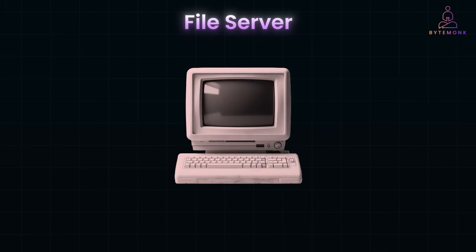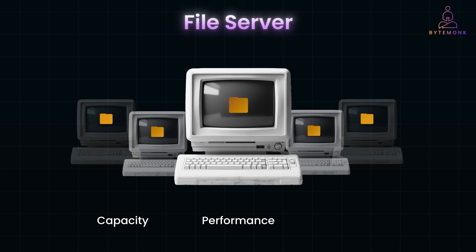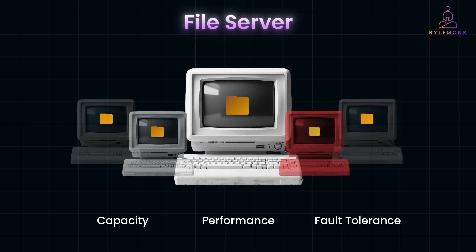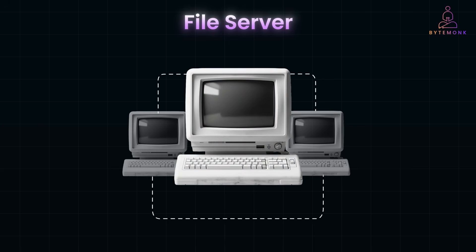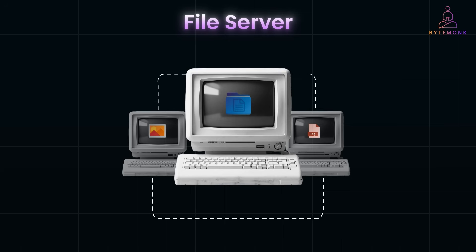When one server isn't enough, we distribute storage across multiple servers. This allows us to increase capacity by adding more machines, improve performance by balancing load, and enhance fault tolerance so that if one server fails, others can take over. For example, with three file servers: server one stores documents and spreadsheets, server two stores images and videos, and server three stores backups and logs. Requests are routed to the right server based on file type — this is a basic distributed file system.